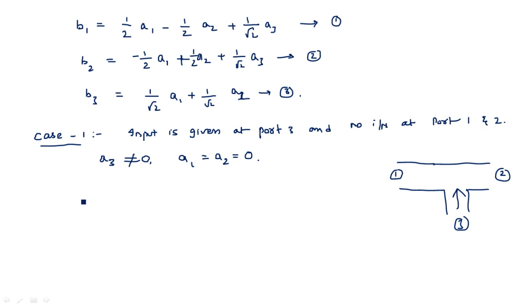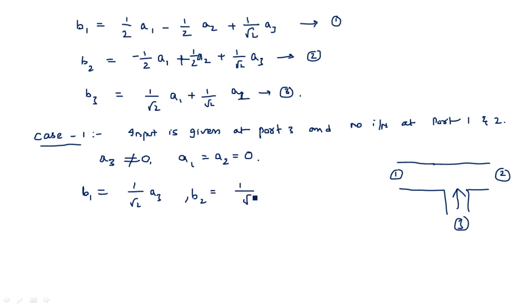Substituting A1 = A2 = 0 into equations 1, 2, and 3: B1 = (1/√2)A3; B2 = (1/√2)A3; B3 = 0, because A1 and A2 don't exist so B3 vanishes.